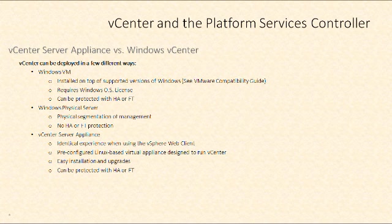Installing on a Windows VM requires a Windows operating system license, but because it's on a virtual machine, it can be protected with either high availability or fault tolerance. If we put vCenter on a Windows physical server, that gives us physical segmentation of management — management is completely outside the vSphere environment — though we lose vSphere protections like HA and fault tolerance.